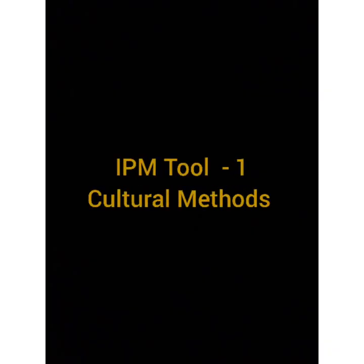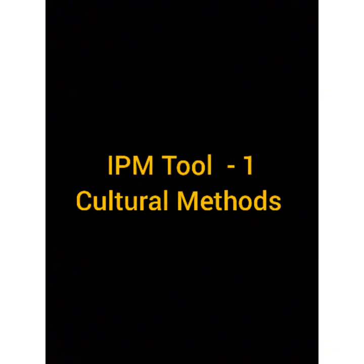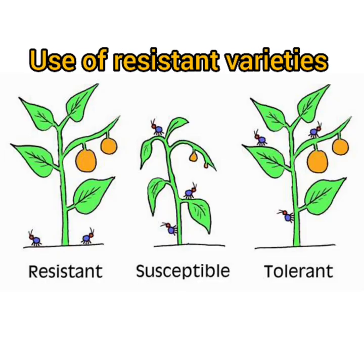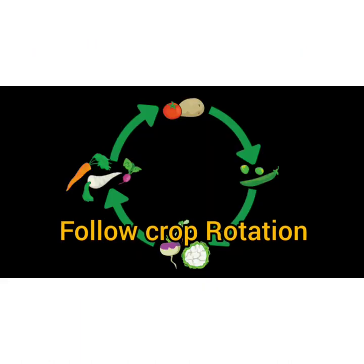The first IPM tool is cultural methods. Using resistant varieties helps to deter pests and diseases. The next cultural method is crop rotation, which is an important factor in preventing diseases and pests.